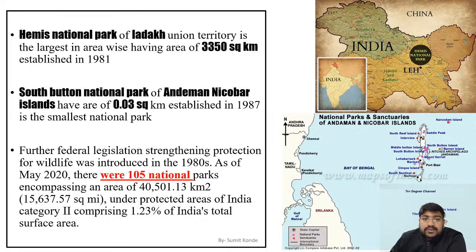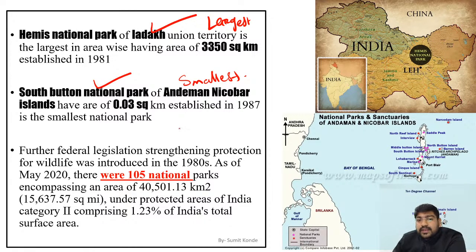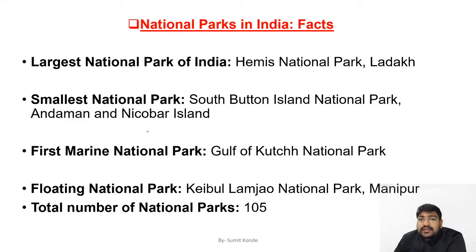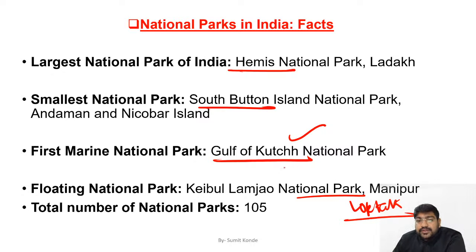Hemis National Park is in Ladakh — that is the largest national park. And South Button is the smallest national park of India. Then we have the Gulf of Kach — not Gulf of Manar. And the Floating National Park is Keibul Lamjao, which is on the Loktak Lake. So Keibul Lamjao is the Floating National Park located on Loktak Lake.